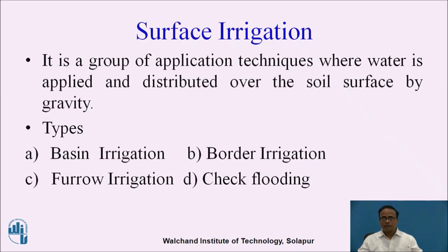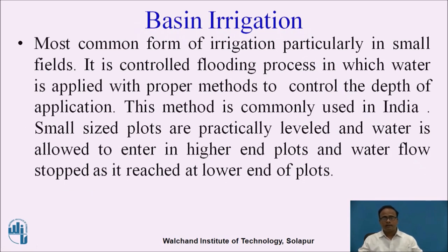A few types of surface irrigation are: basin irrigation, border irrigation, furrow irrigation, and check flooding. Basin irrigation is the most common form of irrigation, particularly applied in small fields. In India, such irrigation is very popular as it controls the flooding process. It is applicable for small sized plots which are practically leveled, and water is allowed to enter at the higher end and flow stops when it reaches the lower end of the plots.